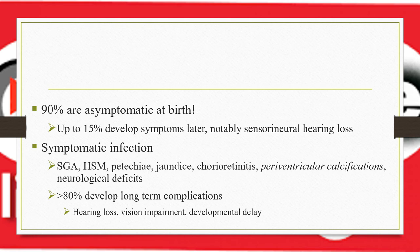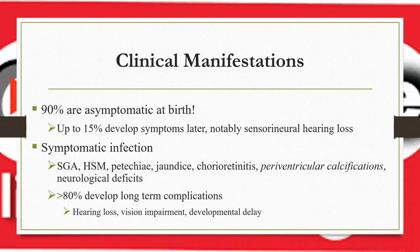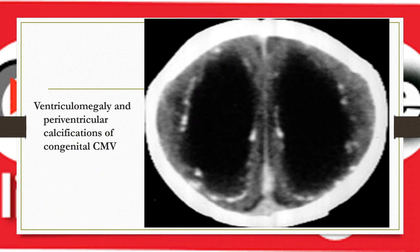Periventricular calcification is a hallmark of CMV infection. Importantly, intracranial calcification in CMV is periventricular, whereas in toxoplasmosis it is diffuse throughout the brain. This is a key distinguishing feature: periventricular calcification points to CMV, while diffuse calcification points to toxoplasmosis. This image shows periventricular calcification with ventriculomegaly in congenital CMV infection.